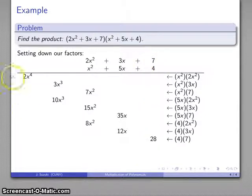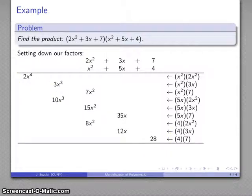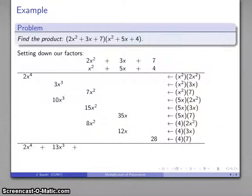These are my partial products. So the actual product is going to be the sum of everything I have. 2x to the fourth, 13x cubed, 30x squared, 47x, and 28. And there's my product.